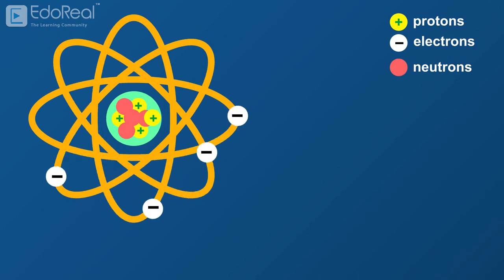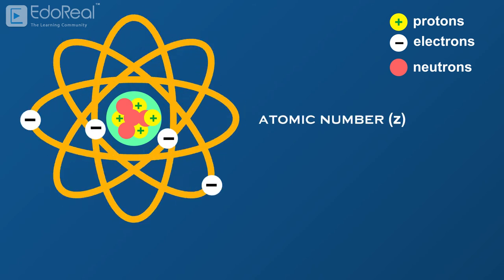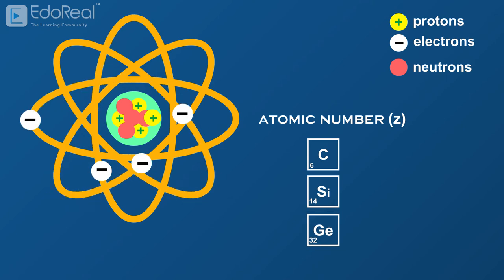The number of protons found in the nucleus of every atom denotes the atomic number Z. The atomic number helps to identify any chemical element uniquely. In an uncharged atom, the atomic number is also equal to the number of electrons.